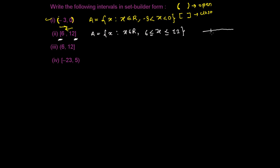If you see on the number line: if this is six and this is twelve, then all numbers greater than six — including six — and all numbers less than twelve — including twelve — are included. That is what we are saying here.